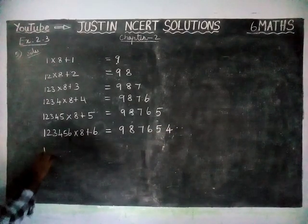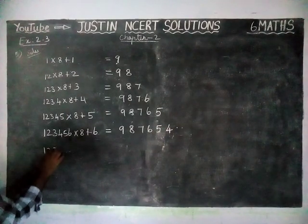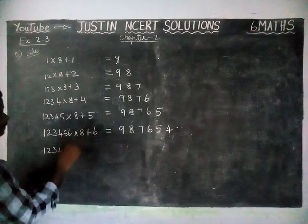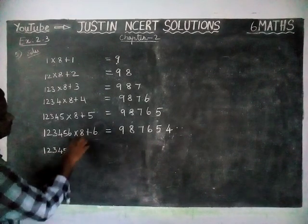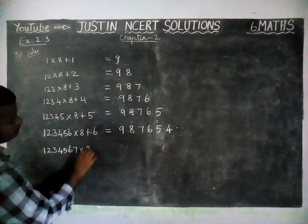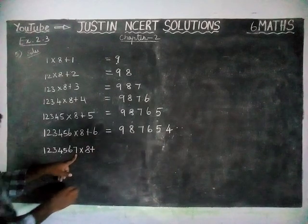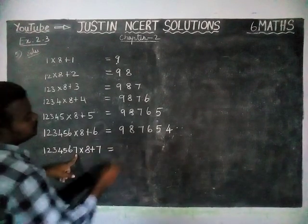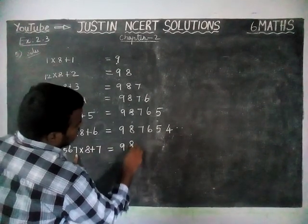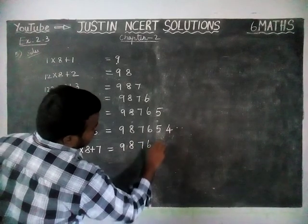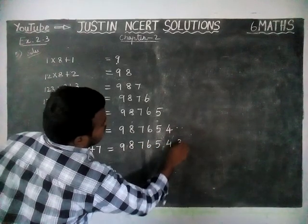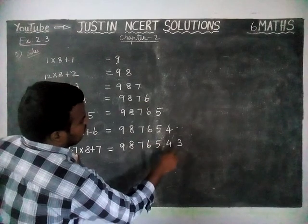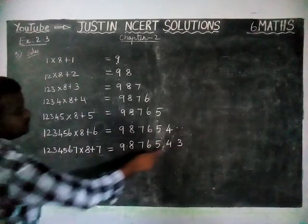Next, 1234567 into 8 plus the ones place is 7, so we are adding 7. The answer is 9, 8, 7, 6, 5, 4, 3, and then 1, 2, 3, 4, 5, 6, 7 digits. Number 7 is there.